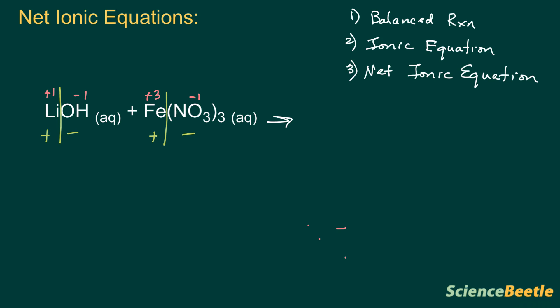So we need a positive three for the iron — that's how we determine it to be plus three. Now this is the first step. We need to figure out what we get on the other side, so we need to make the prediction. Between the two cations — lithium and iron — we need to figure out: is lithium higher in the activity series than iron? If you look at your activity series chart, you'll find that lithium is actually greater in activity than iron.